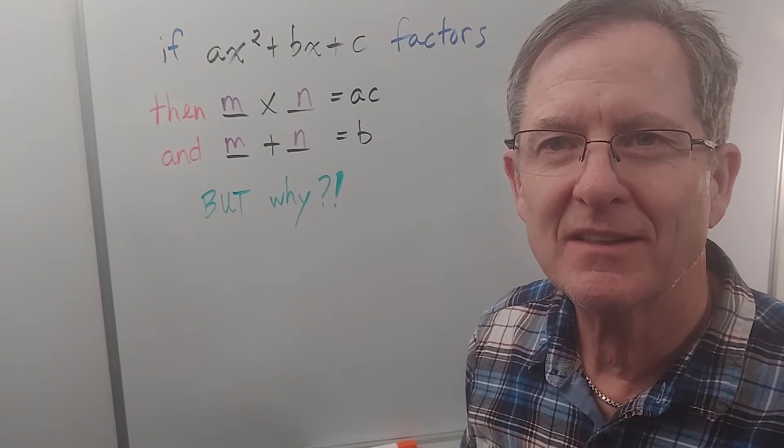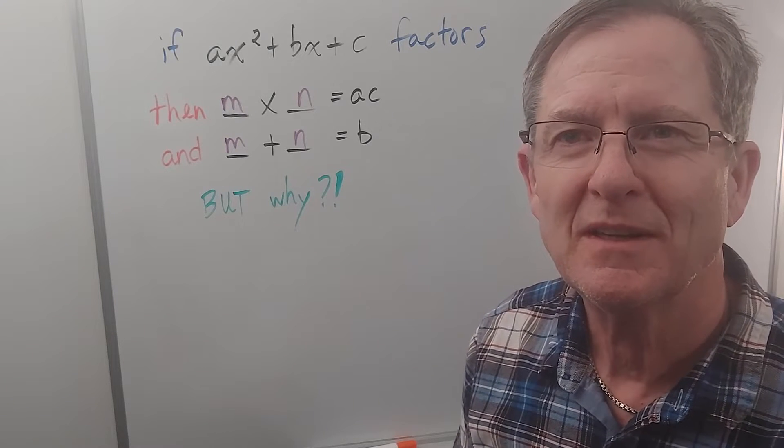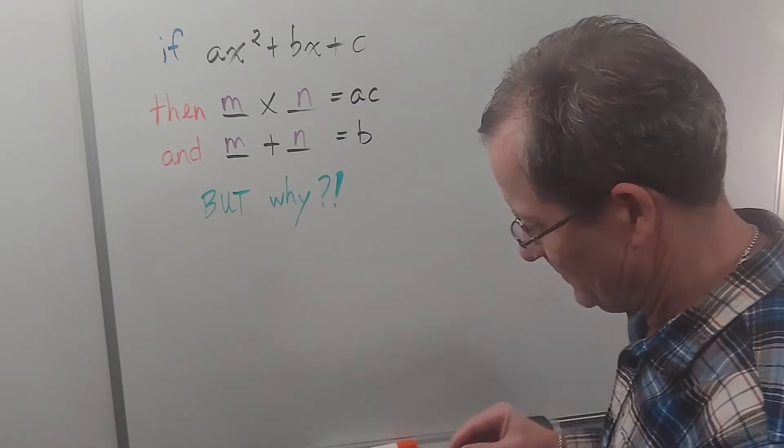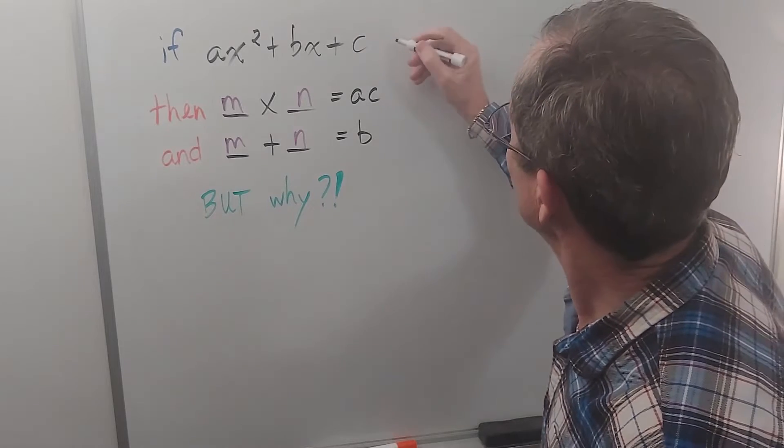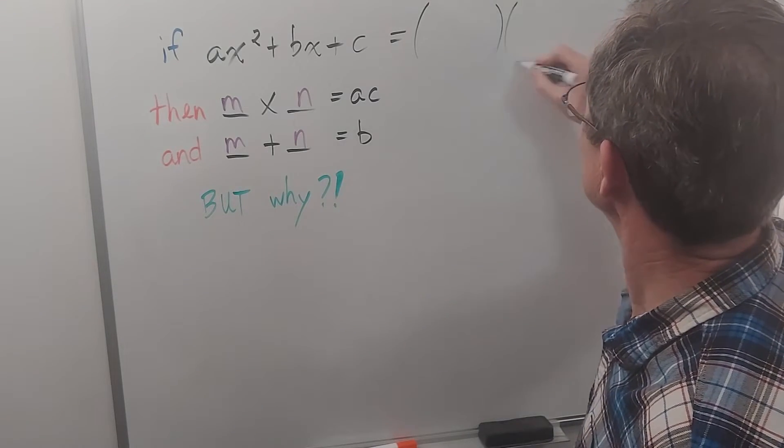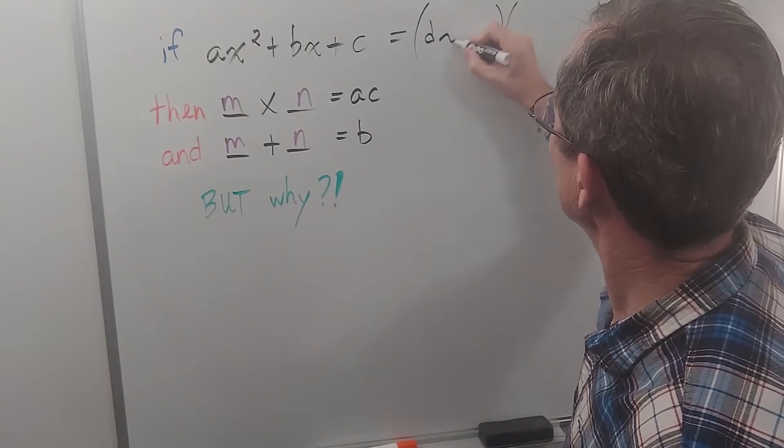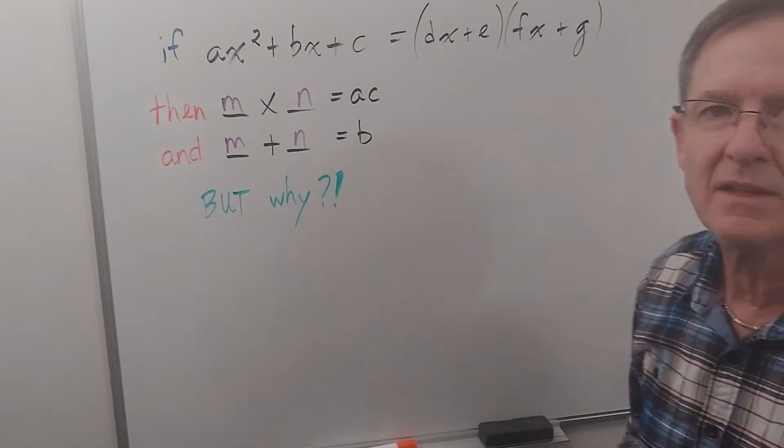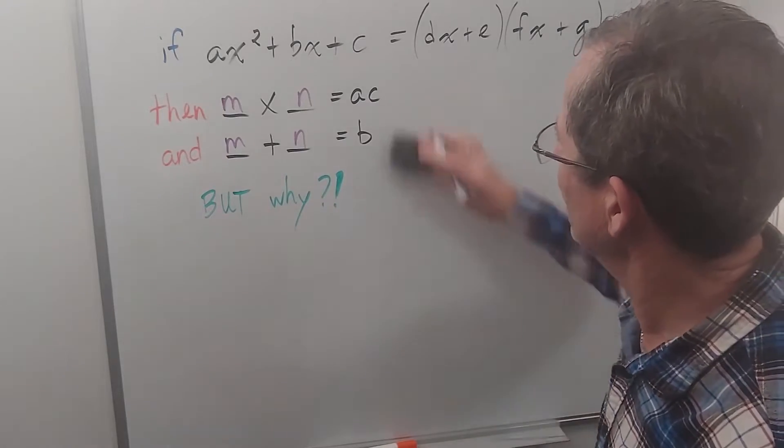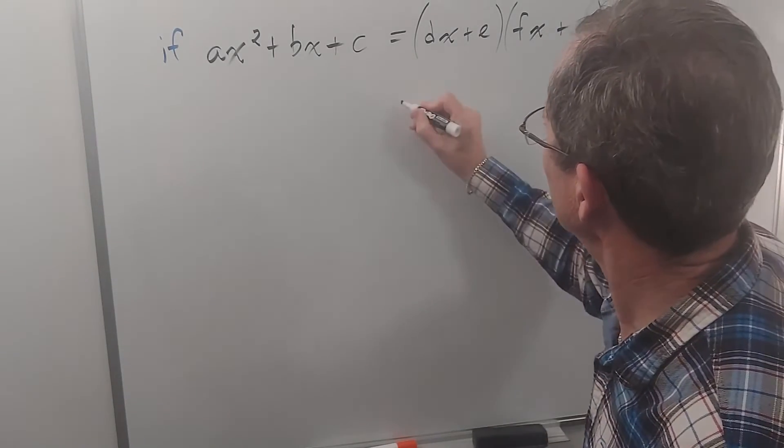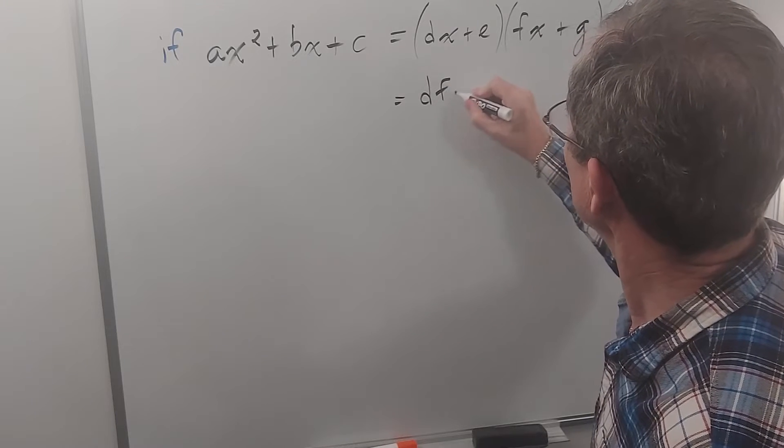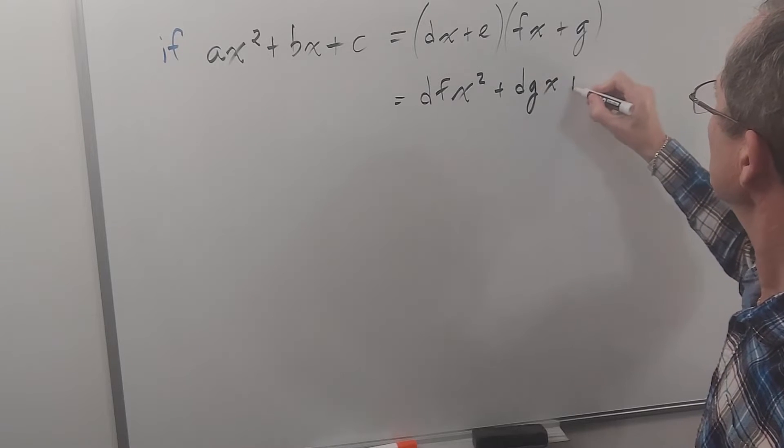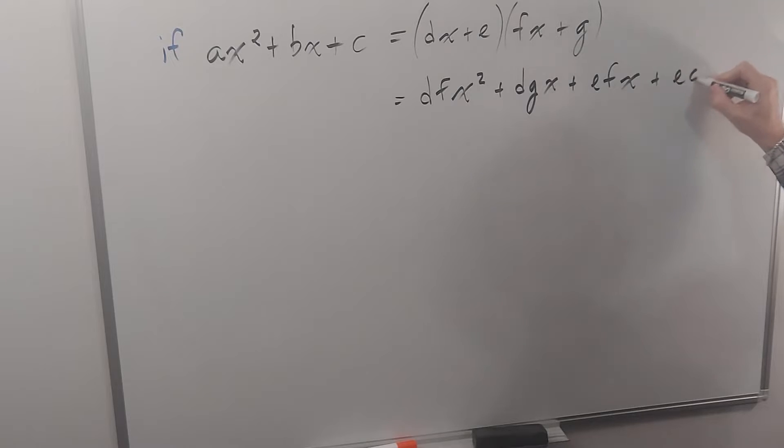It is not obvious so let's prove why we have to look for those two numbers. First we're going to write this in factored form. So if it factors then it could be dx plus e and fx plus g using the next four letters of the alphabet. If I expand that I get dfx squared plus dgx plus efx plus eg.